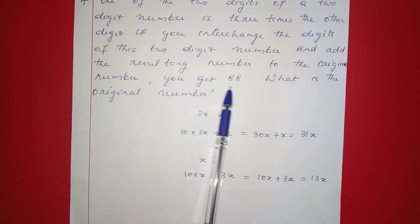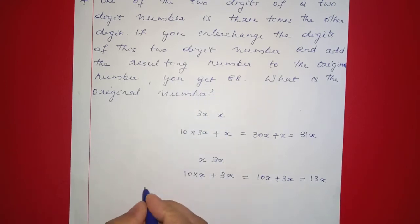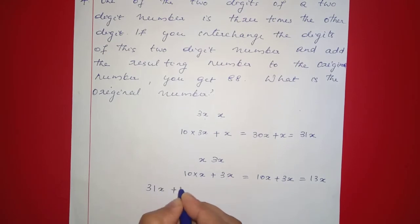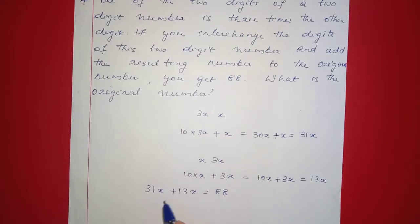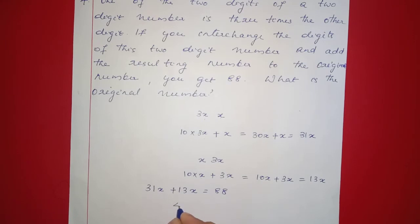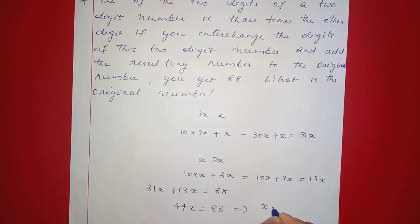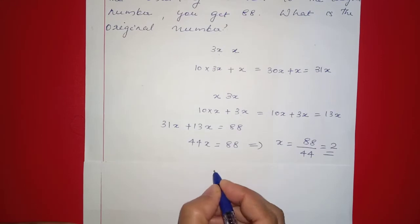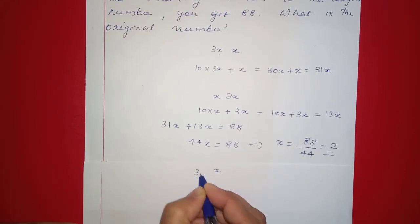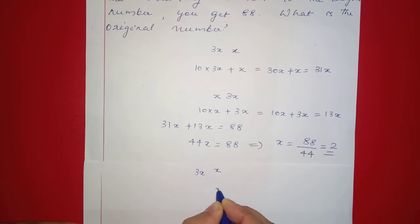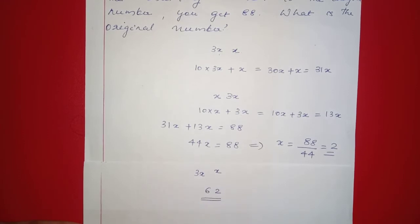We set up the equation: 31x plus 13x equals 88, which gives 44x equals 88, so x equals 88 divided by 44, which equals 2. Therefore 3x equals 6, and the original number is 62.